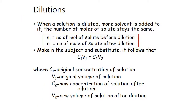For dilutions: when a solution is diluted, more solvent is added but the number of moles of solute stays the same. Therefore C₁V₁ equals C₂V₂, where C₁ is the original concentration, V₁ the original volume, C₂ the new concentration after diluting, and V₂ the new volume after dilution.